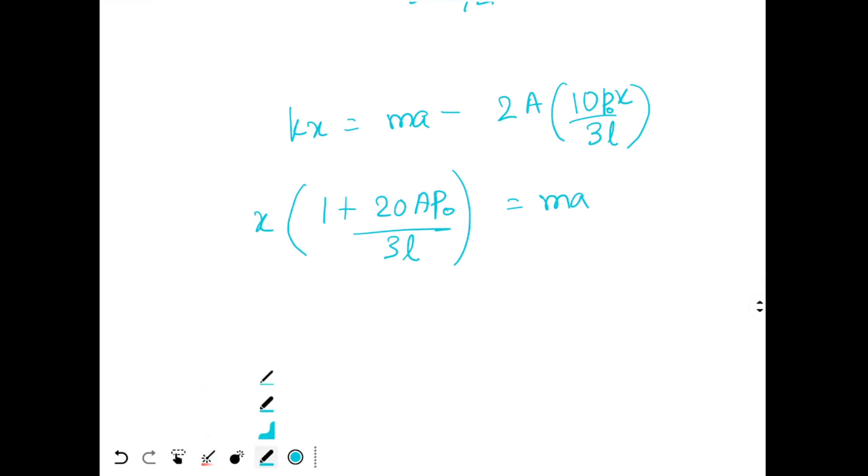If you rearrange this equation, you will get X times K plus 20 A P0 by 3 L is equal to Ma. So X will be equal to Ma divided by this whole term. This is the elongation of the spring.